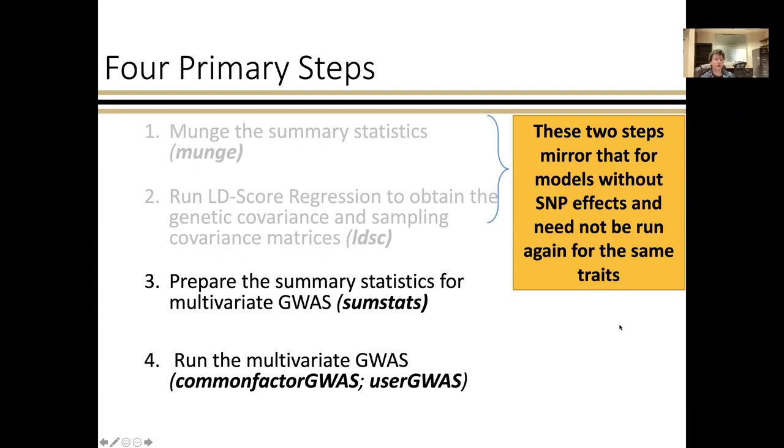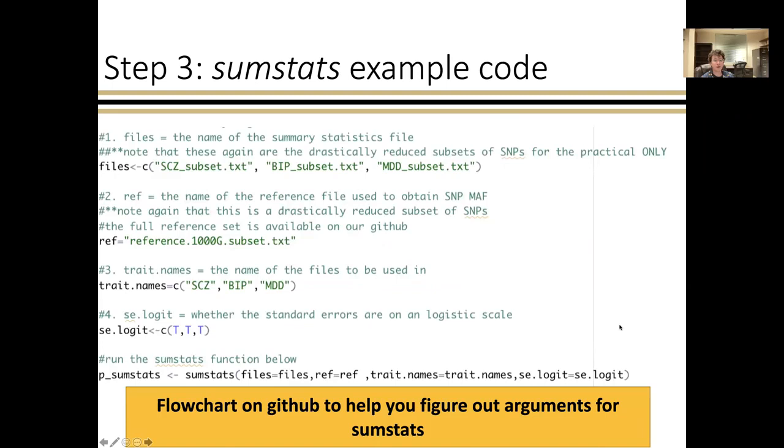The sum stats takes a number of different arguments. It can be a little bit confusing. And I'll note that we have a flowchart on our GitHub to help you figure out how the argument should be specified. Again, we're using the drastically subset SNPs for the purpose of the presentation. And we're also using a subsetted reference file, which is used to align the alleles and to pull up the SNP minor allele frequency. The third argument is the trait names.